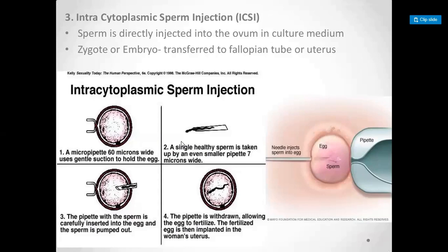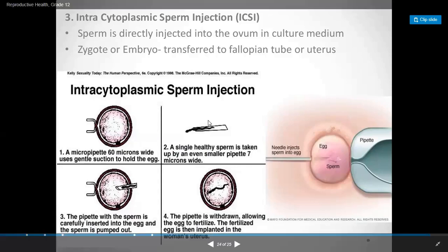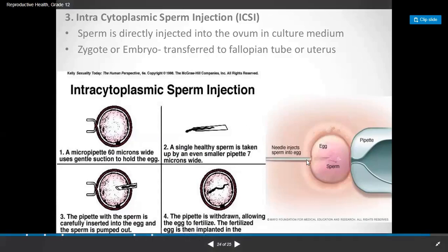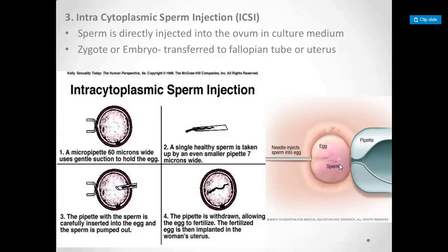Next is ICSI — Intra-Cytoplasmic Sperm Injection. This is an IVF method where eggs are collected from the female and sperm from the male. A single sperm is injected directly into the egg using a micro-injection technique under a microscope. The fertilization happens inside the egg, and then the fertilized embryo is transferred directly into the fallopian tube or uterus.